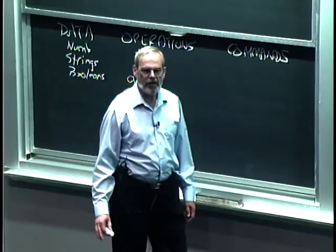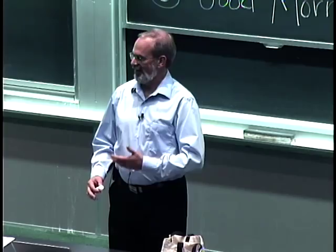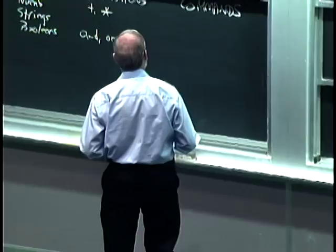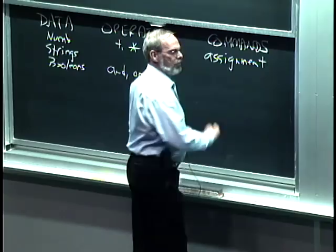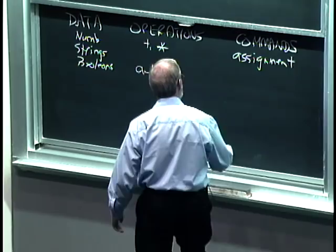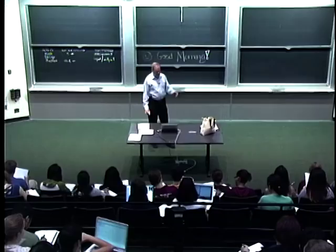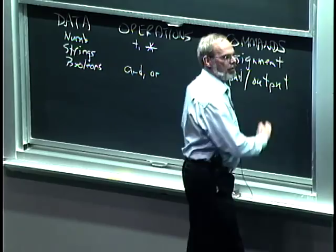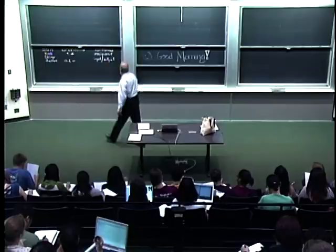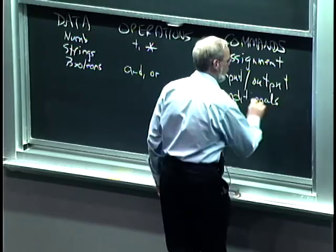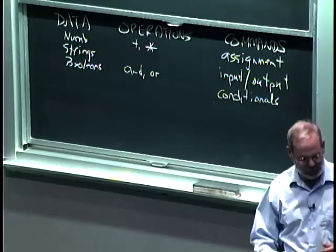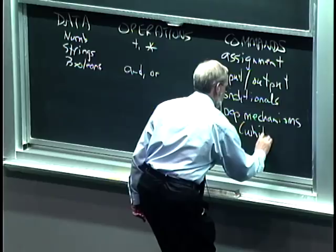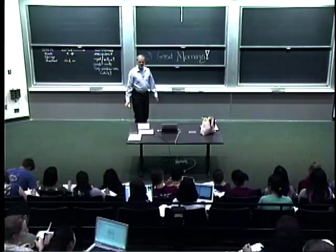The main thing we've done is talk about commands, and we've seen four different kinds: assignment — how to bind a name to a value; input and output — print for output and raw_input for input; conditionals, or branches — ways of changing the flow of control; and loop mechanisms, where while was the first example we saw.